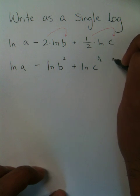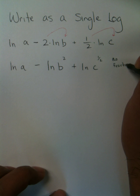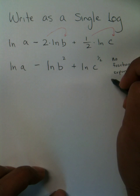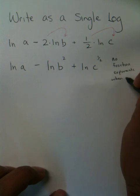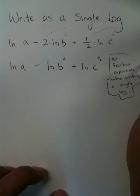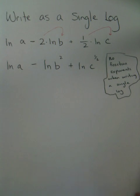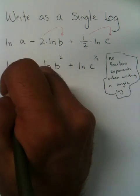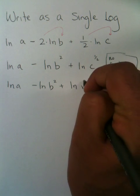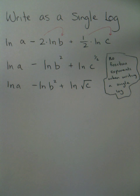Now, there should be no fraction exponents when writing as a single log. So what I'm pointing out here is basically this 1 half power needs to be rewritten into a radical. Fraction exponents are radicals. And so now we clearly see what we're working with.